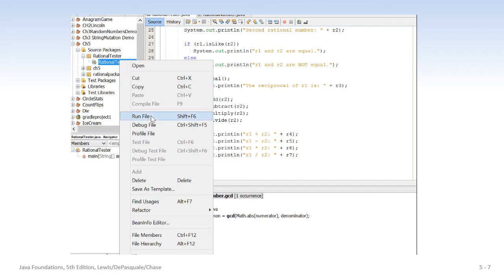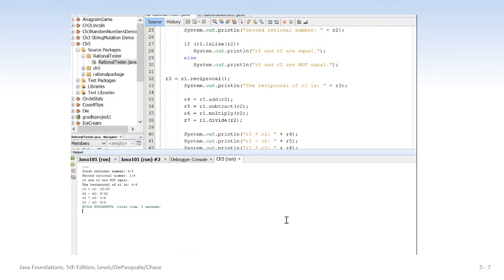I'm not going to spend a lot of time running it multiple times. I just want you to see first rational number R1, 3 fourths, second 1 third. Remember it was 6 eighths and it reduced it. R1 and R2 are obviously not equal. The reciprocal of R1 is 4 thirds. R1 plus R2, 13 twelfths. R1 minus R2, 5 twelfths. R1 times R2, 1 quarter. R1 divided by R2 is 9 quarters.